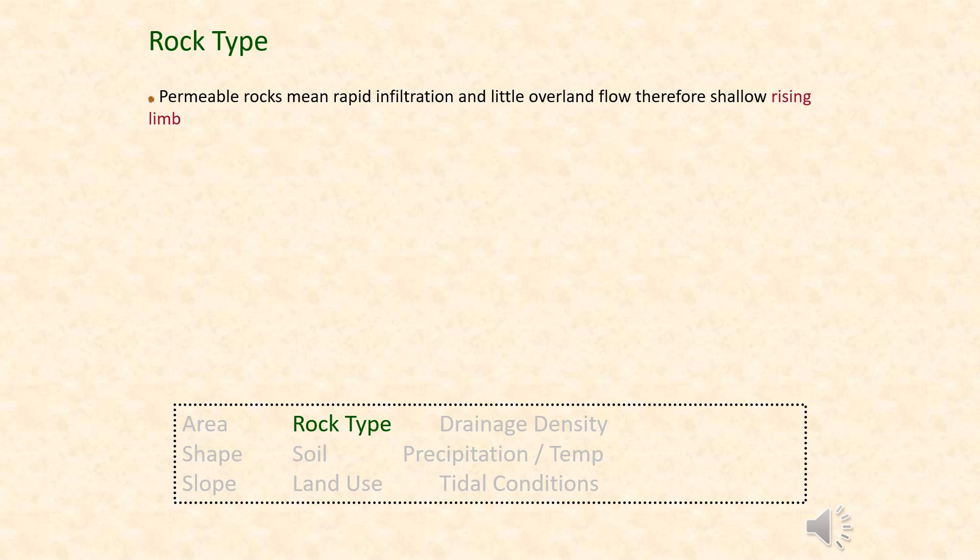The rock type that the drainage basin is made from is also an influencing factor. Permeable rocks allow for rapid infiltration and very little overland flow, resulting in a shallow rising limb and less likelihood of flooding. If, however, we have an impermeable rock — one that doesn't allow water to pass through it — then we get a large amount of overland flow, a very fast rising limb, and a potential for flooding.